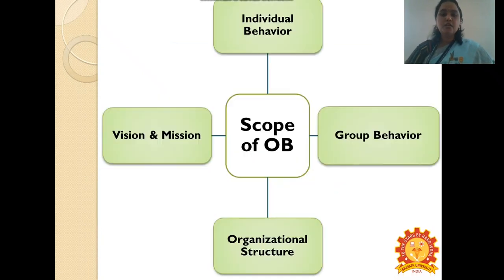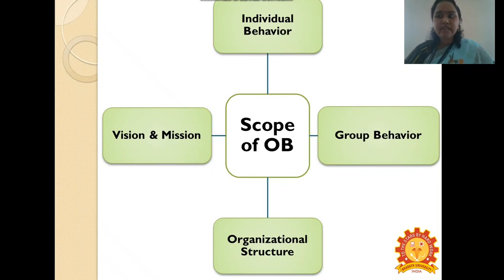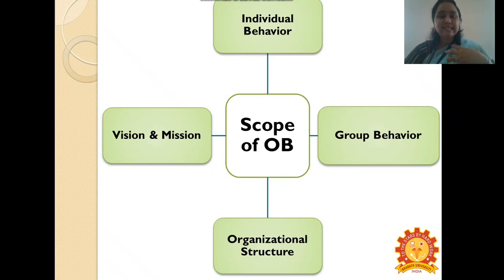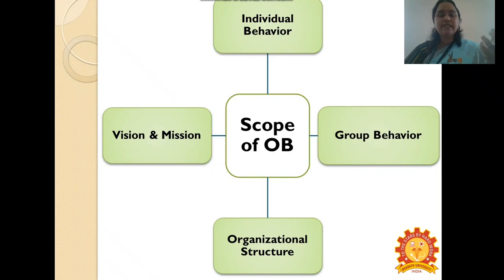The scope of OB comprises four aspects. The first is individual behavior. OB studies aspects like motives, attitudes, perception, personality traits, different forms of learning, and how to manage stress — everything concerned within an individual. This 'I, me' concept is studied extensively as individual behavior.